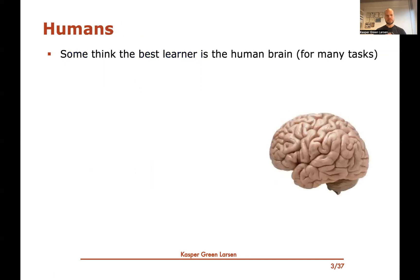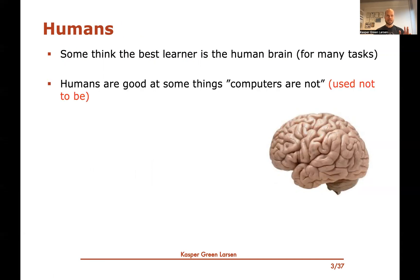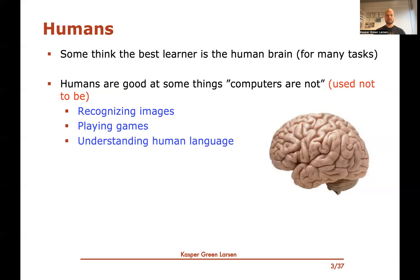As a first motivation of where neural networks come from — or where the ideas behind neural networks come from — one way of thinking is that one of the best learners that nature has ever produced is probably the human brain, at least for a lot of tasks. In particular, it used to be the case that humans are really good at some things that computers are not so good at — recognizing images, playing games, understanding human language, and so on. These are tasks that, at least before neural networks, were really hard to make computers solve in a good and satisfactory manner.